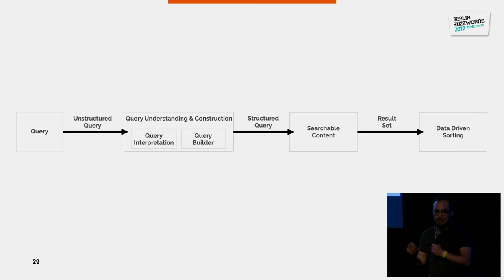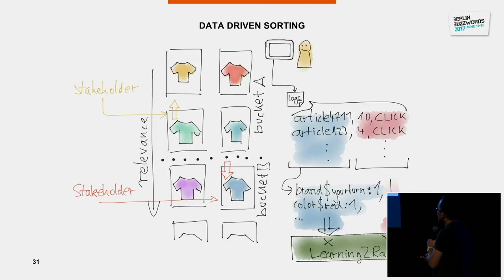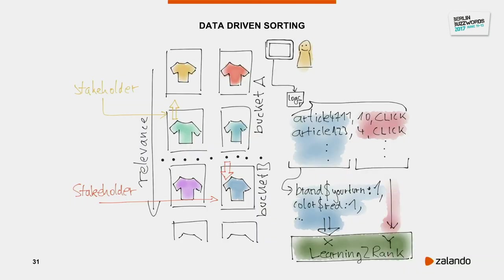This brings us to data-driven sorting. In full-text search you have many relevance signals, but here because this is essentially a structured query — show me articles in this category, this color, this brand — the data itself doesn't tell you what's most relevant. Sorting is the most political feature of search because many stakeholders want to influence it: brands push certain articles up by arrangement, seasons change article priorities, and various people want to adjust sorting for business reasons.